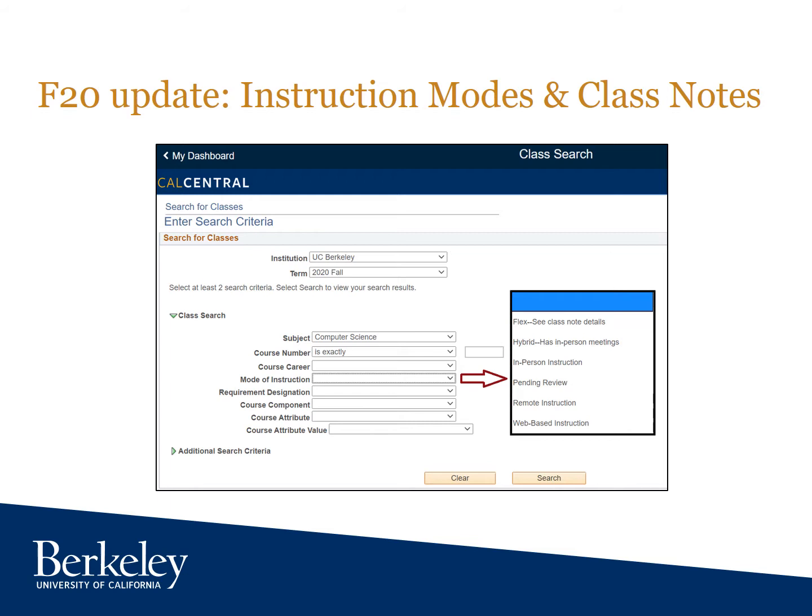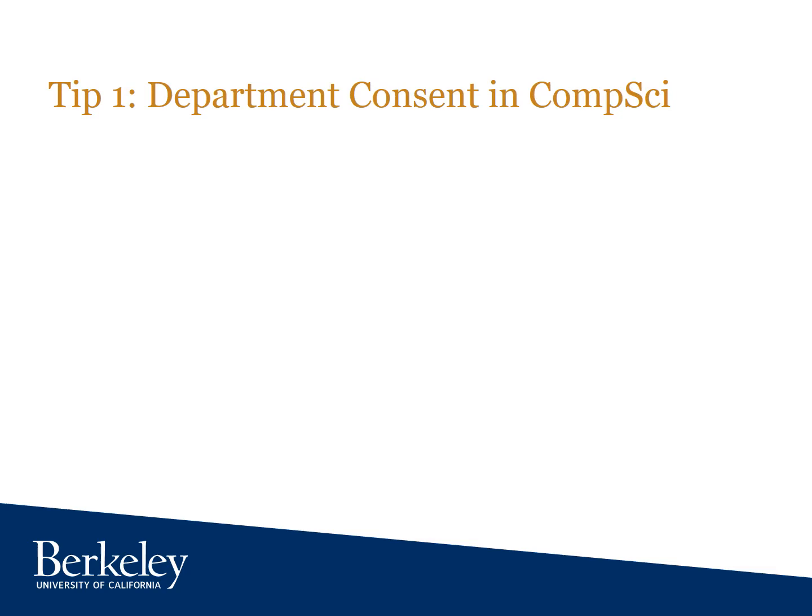The first couple of tips are about error messages you may see when you try to enroll in a class. Tip one: department consent really means that the class is temporarily closed. This one is unique to the computer science department — other departments don't use the setting that way.